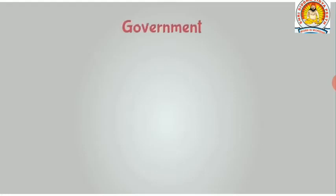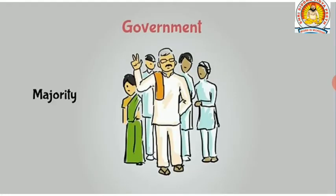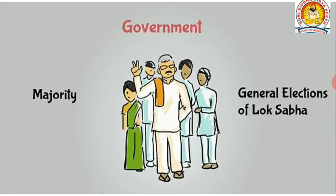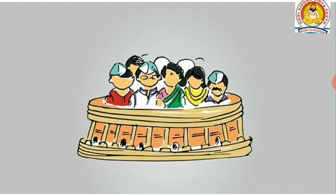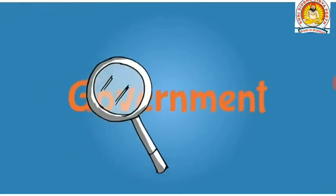The government is formed by the party that gets more than half the seats and gets majority votes after the general election of Lok Sabha. Members of both these houses are called Members of Parliament, or MPs. The parliament checks to see if the government is doing a good job or not, and if they are not, they can raise a question against it.